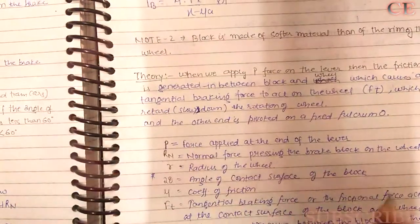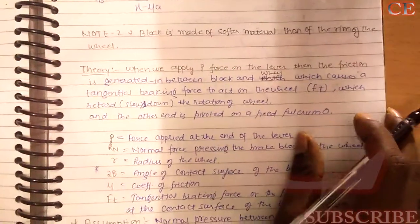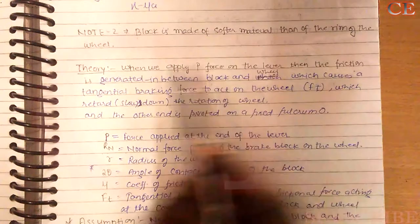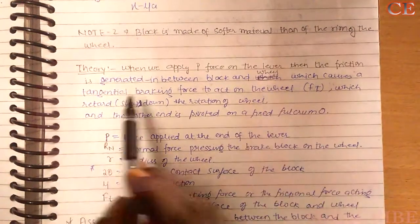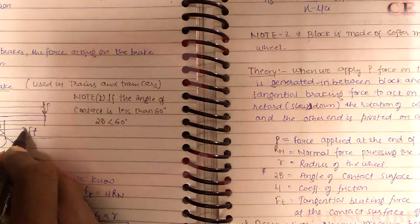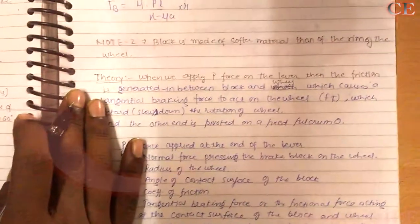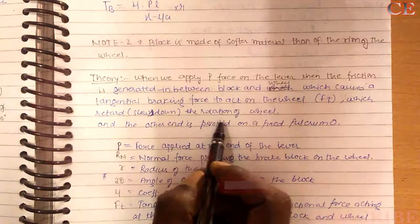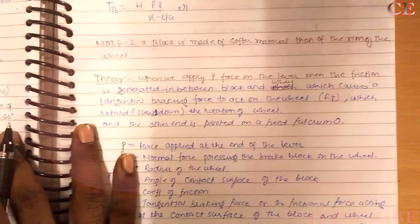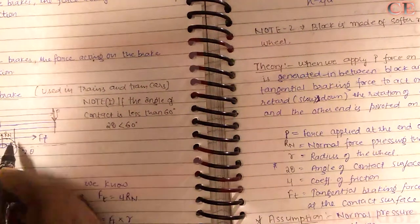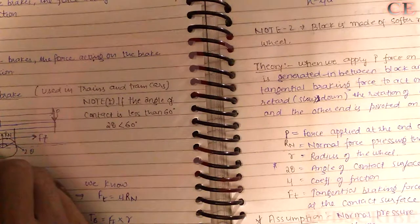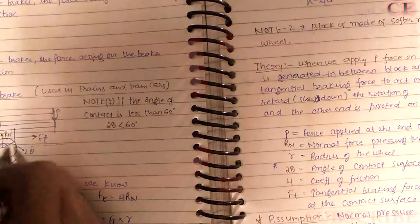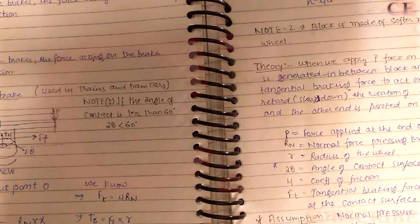When friction is generated between the block and the wheel, a tangential braking force Ft acts on the wheel in the tangential direction. This tangential force retards or slows down the rotation of the wheel — which is the usual effect when friction is generated at the contact surface.